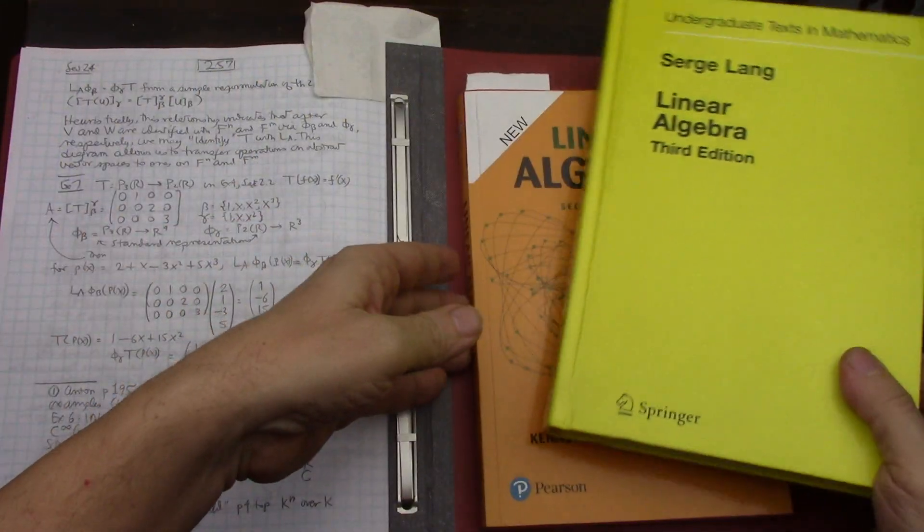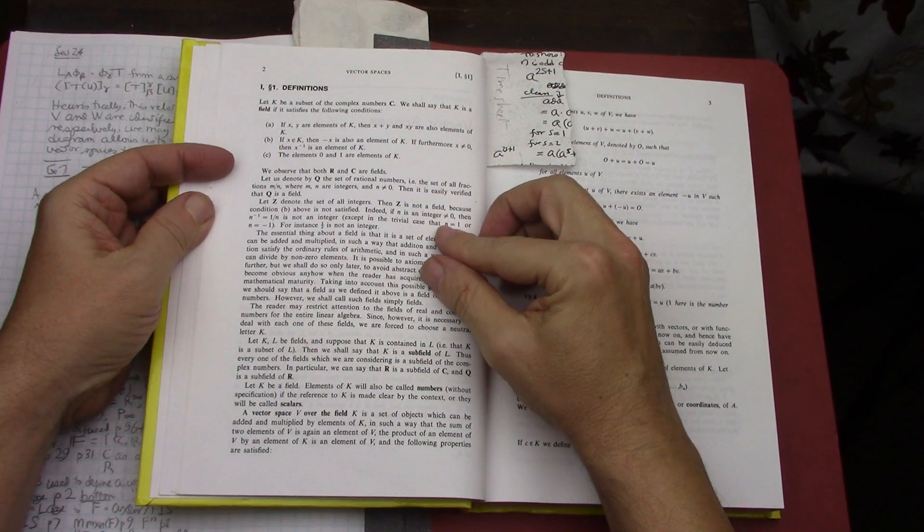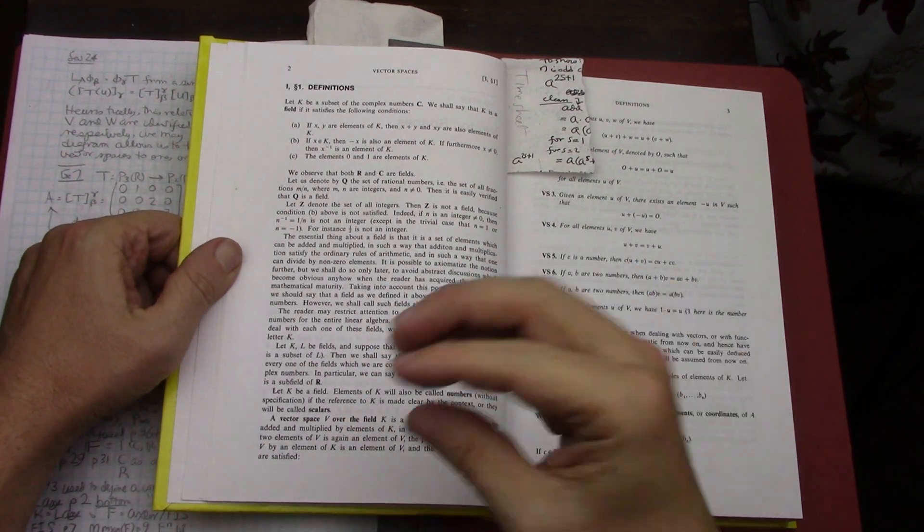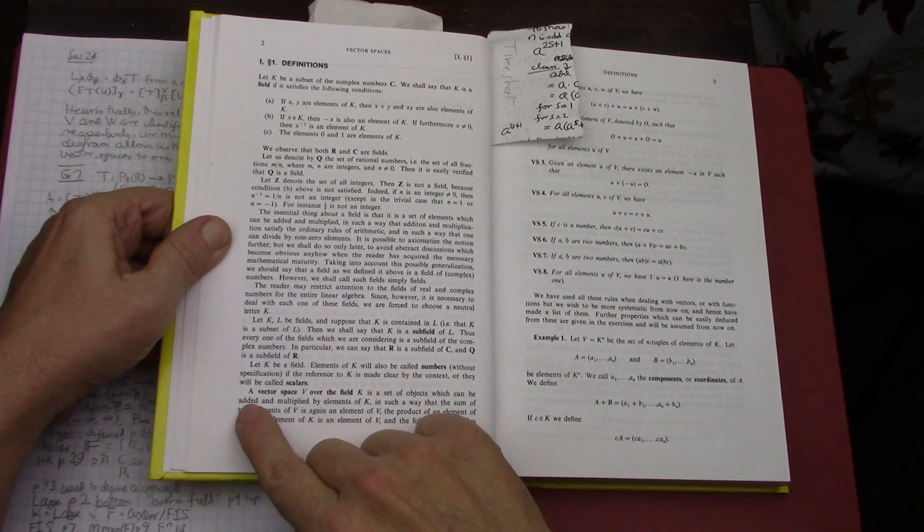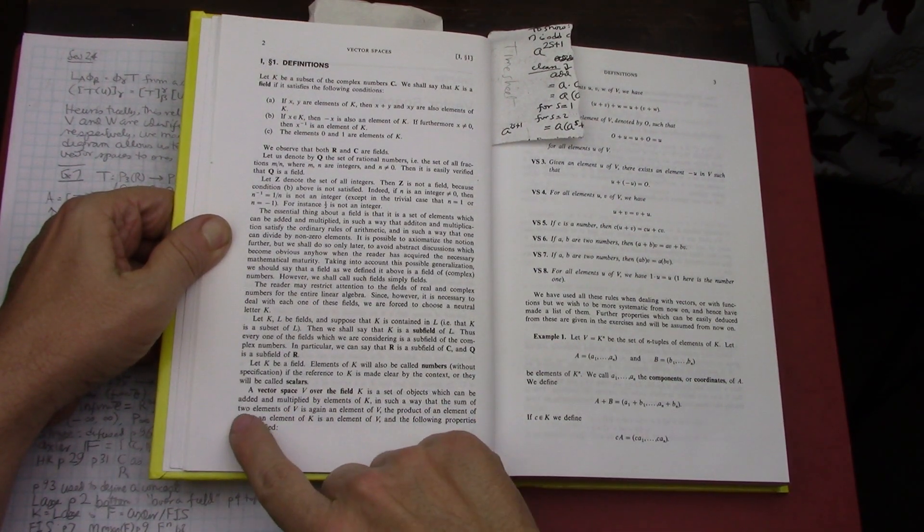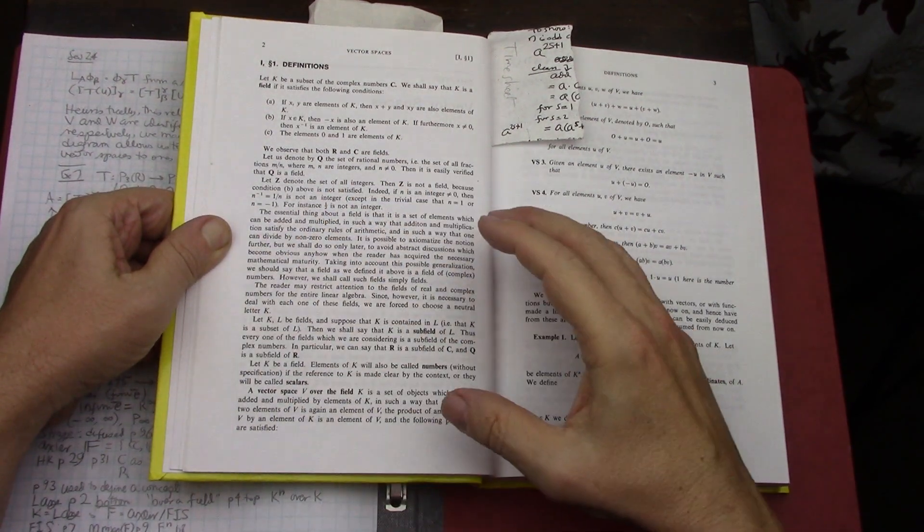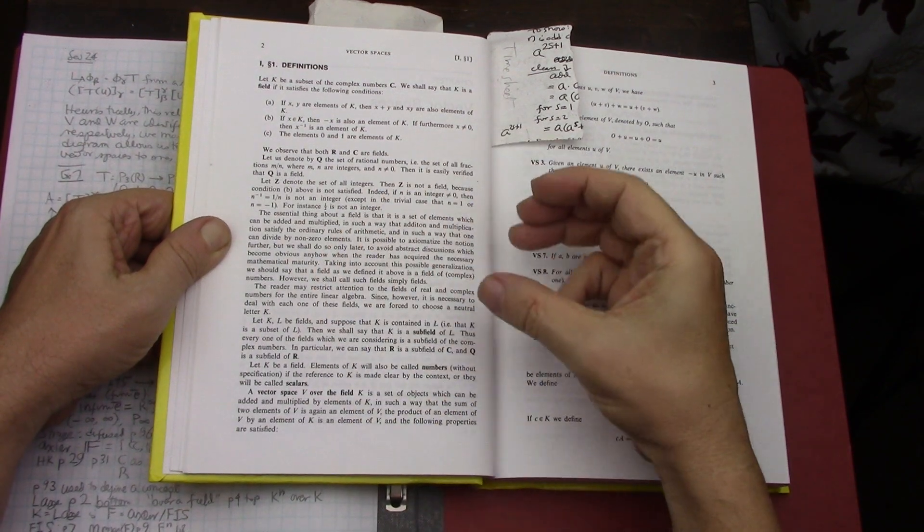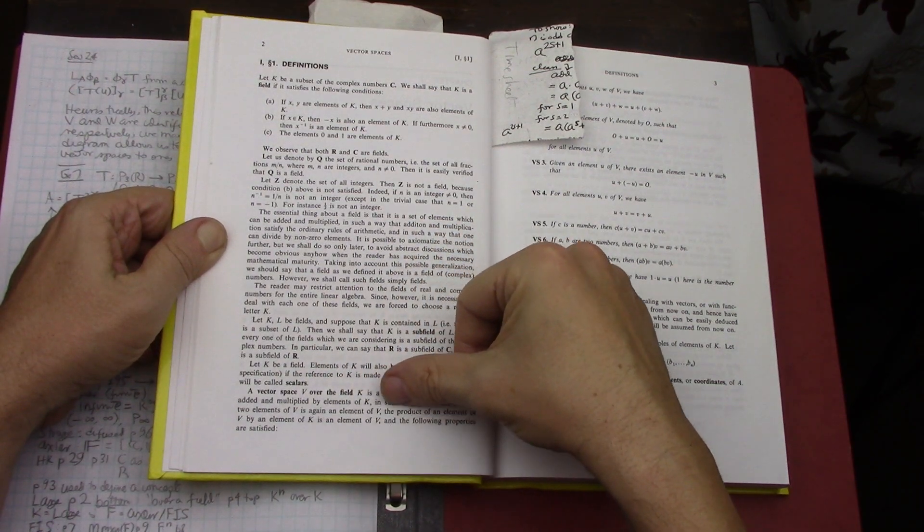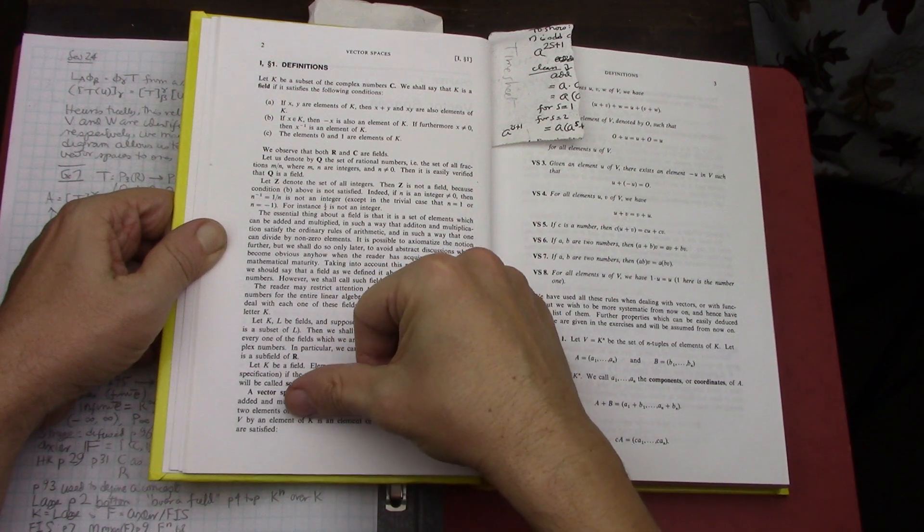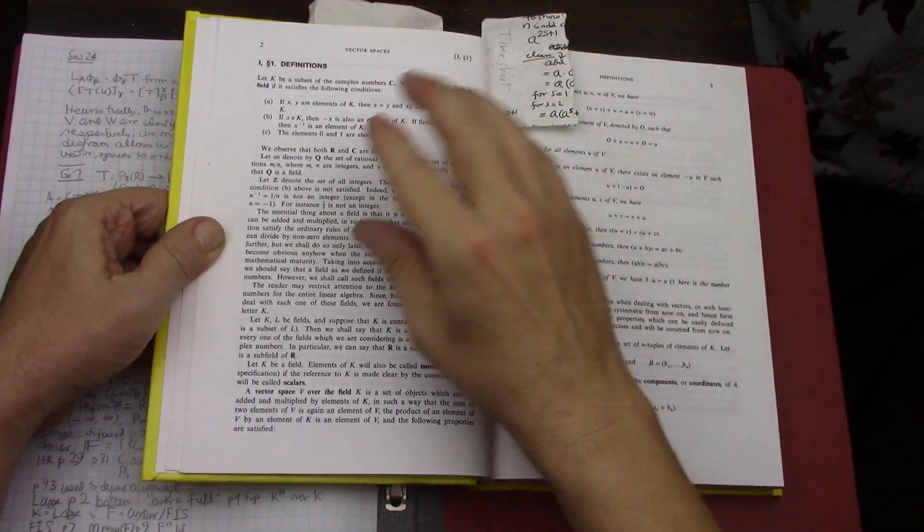So then in the case of Lang, I really like the way Lang starts his book, because in the case of Lang he really explains the difference between the vector space and the field over which the vector space operates. So he's got a really nice definition here that says a vector space V over the field K is a set of objects which can be added and multiplied by elements of K. So the elements that you're multiplying and adding are all in that field. If they're reals you're only doing real numbers, if they're complex you're only doing complex numbers and so on. So he really starts at the very beginning of the book.